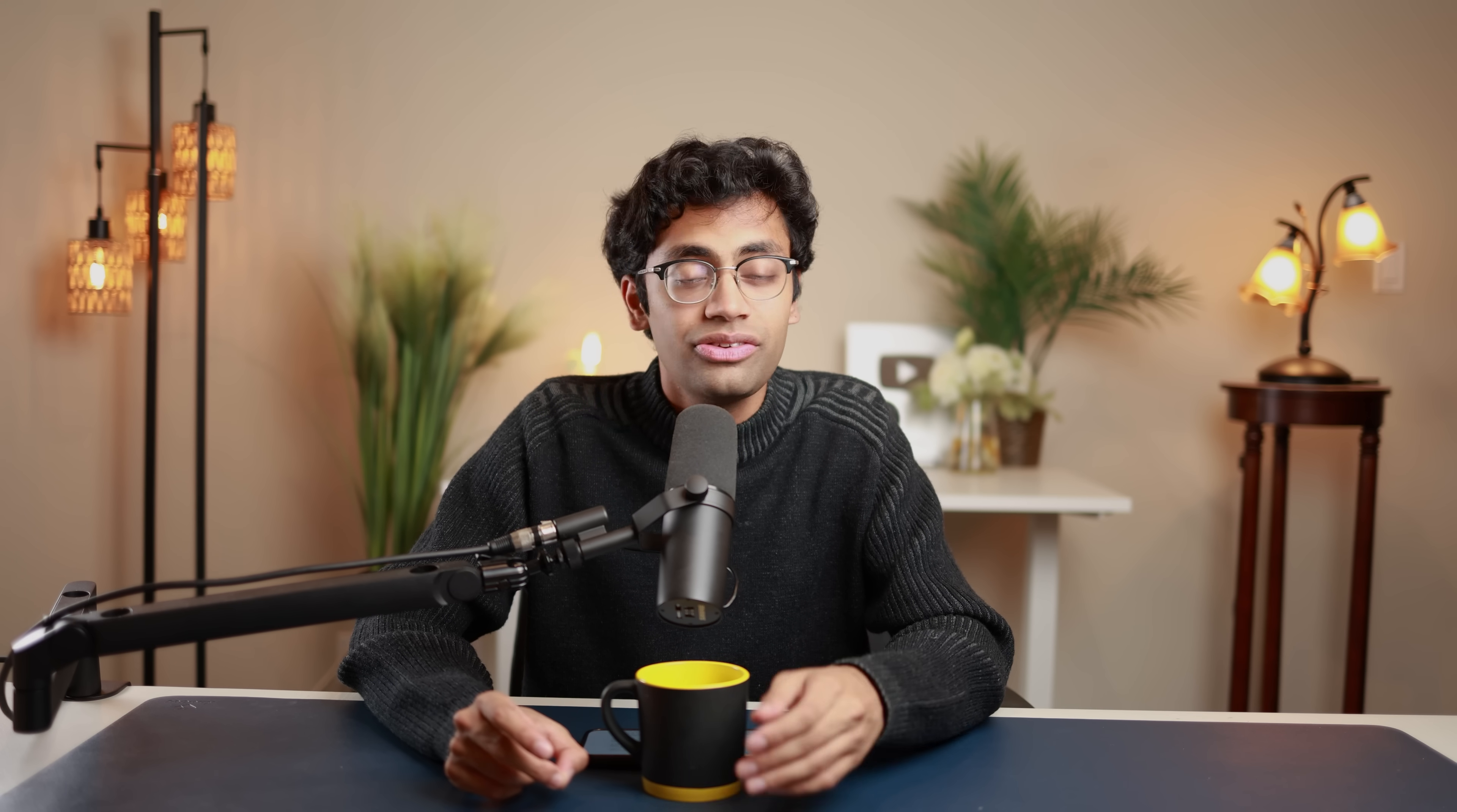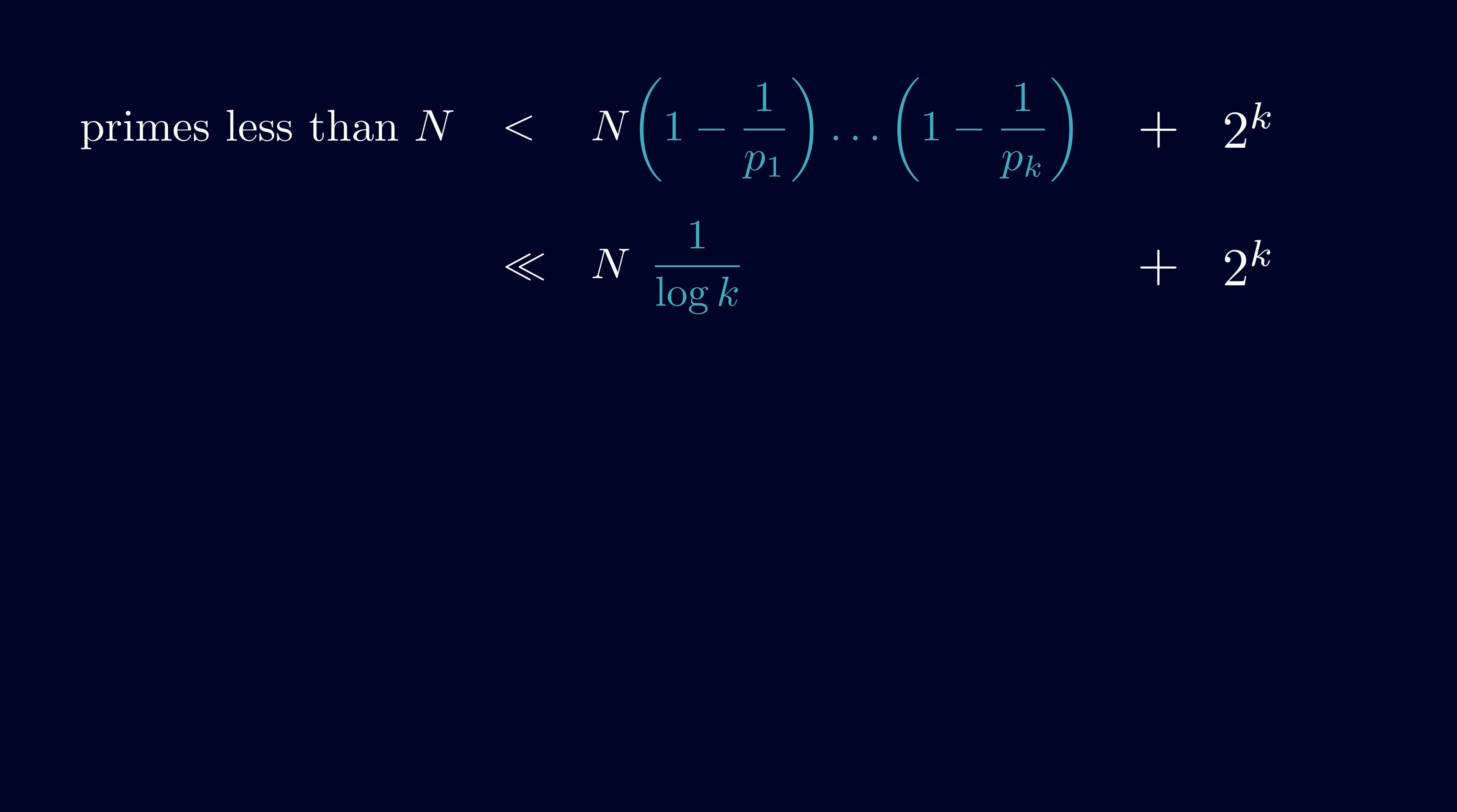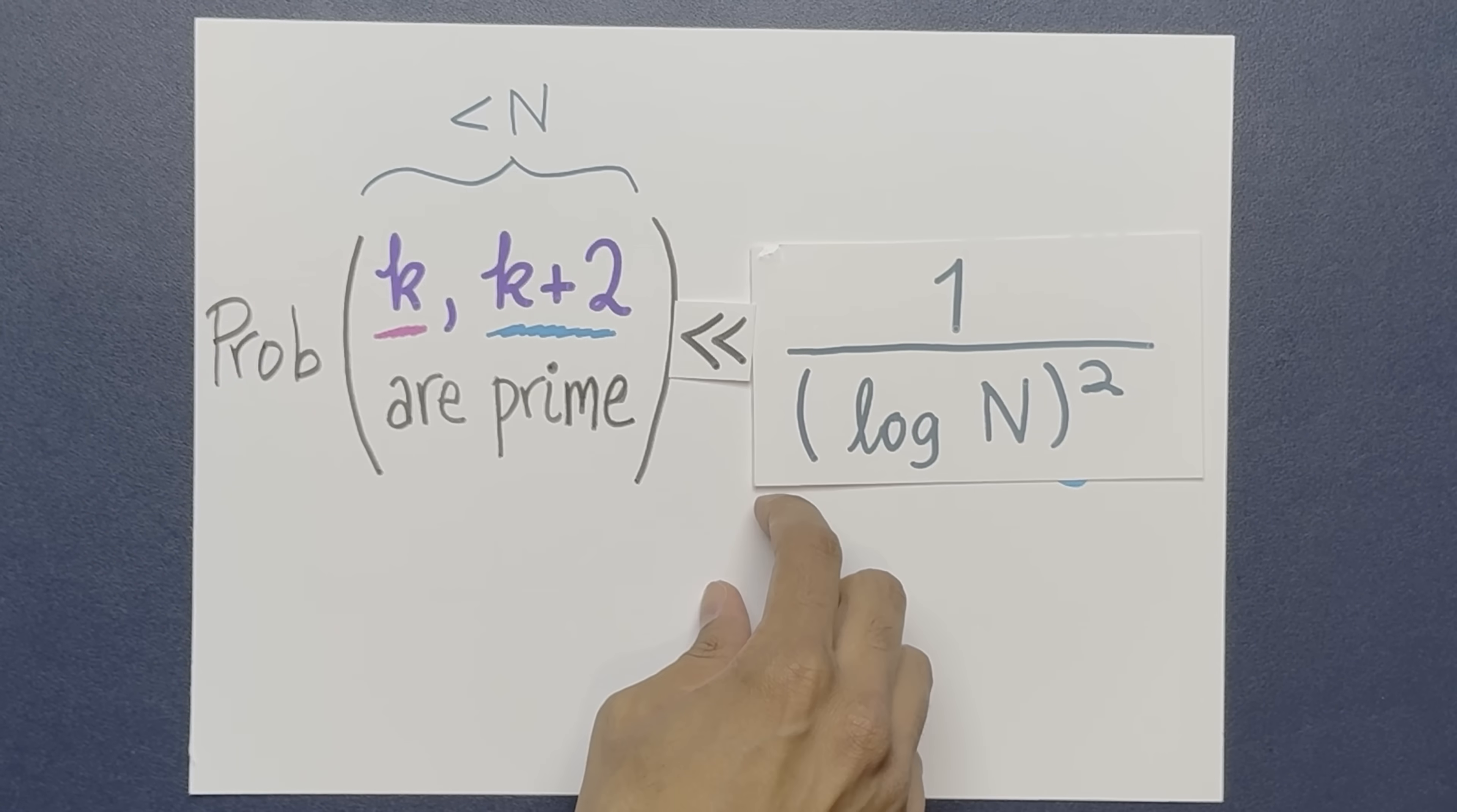But the real benefit of sieve techniques is not just that they can count primes, but they can count twin primes. This is exactly what Brunn did. He introduced an extra parameter in the sieve and said it just right. And then he proved his theorem. Now, Brunn's sieve was a huge breakthrough.